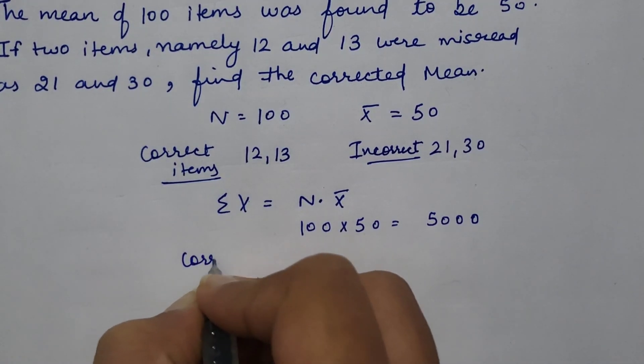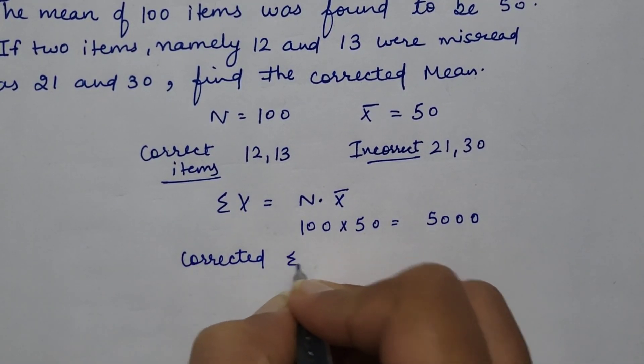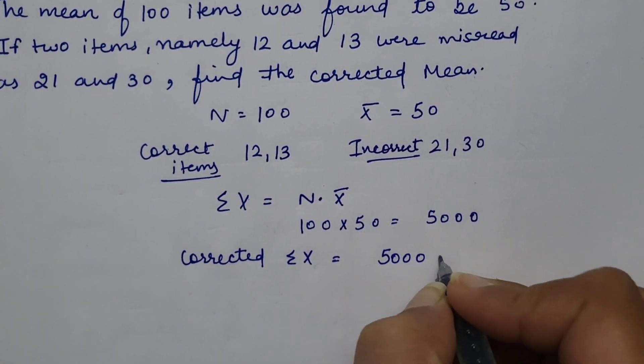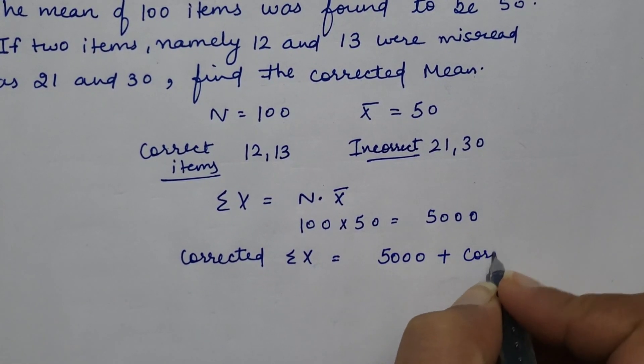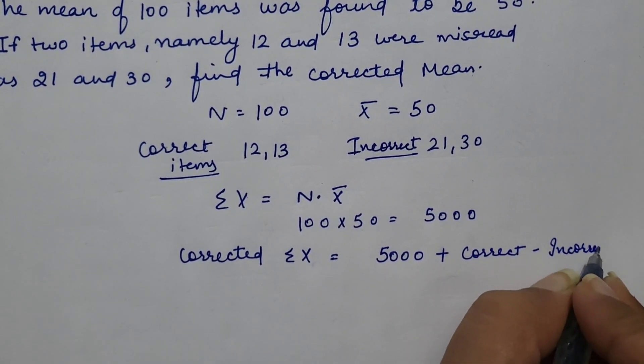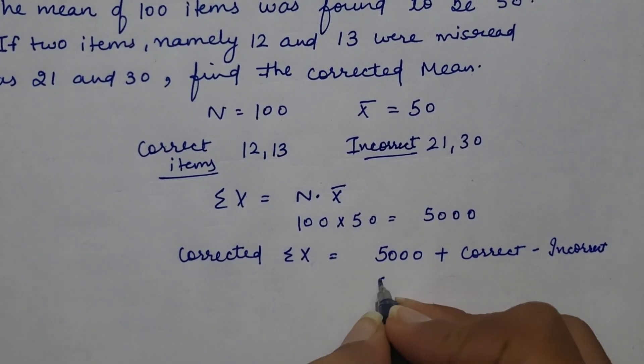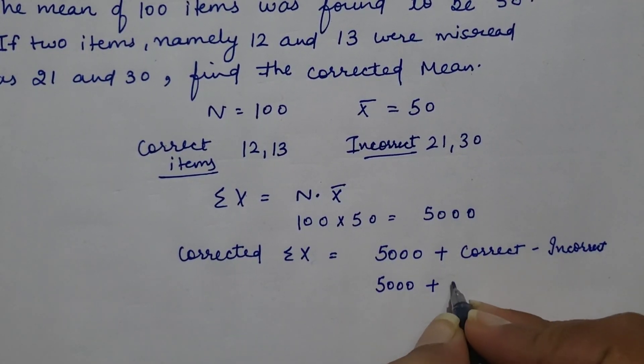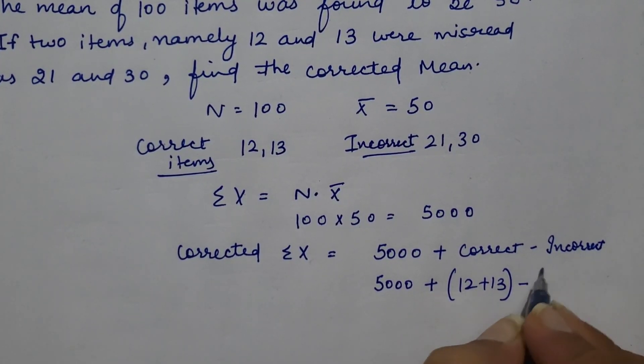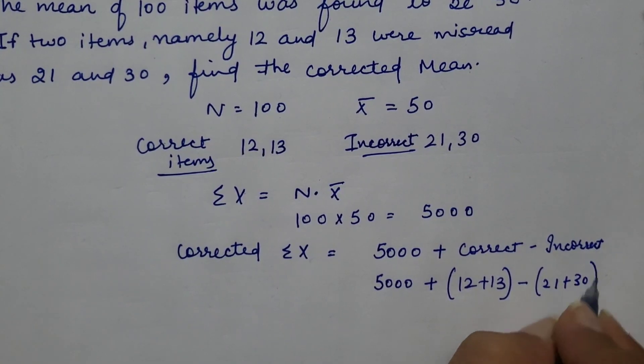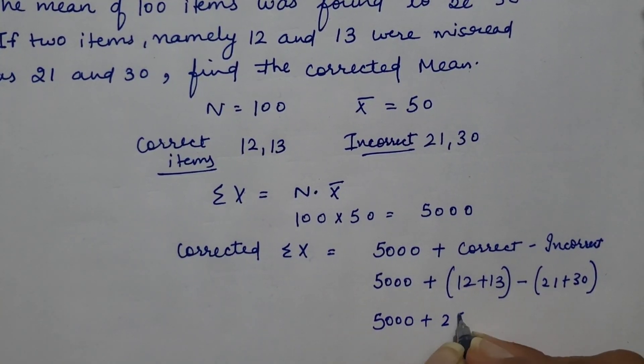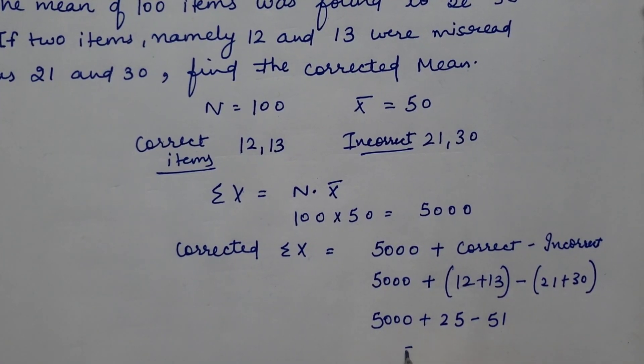Next, we will calculate corrected summation x. 5000, we will add correct items and subtract incorrect items. 5000, correct items 12 plus 13, and incorrect items 21 and 30.